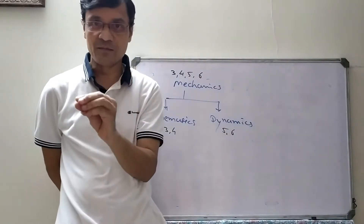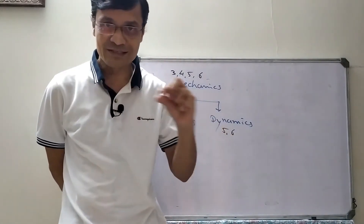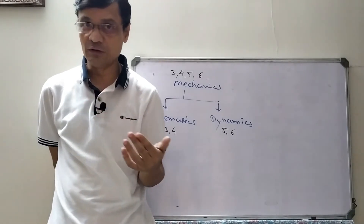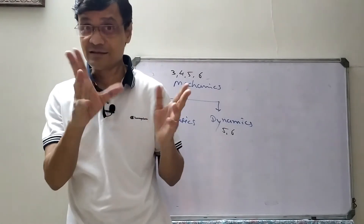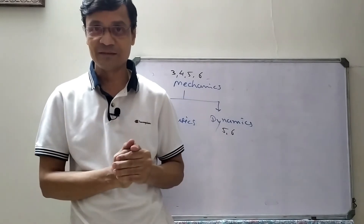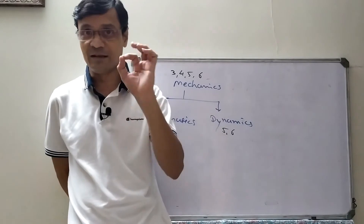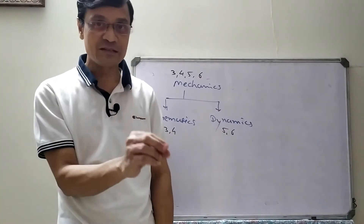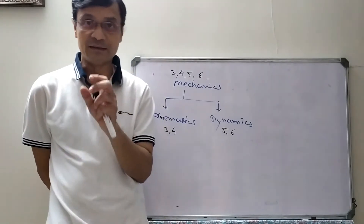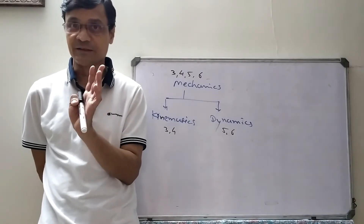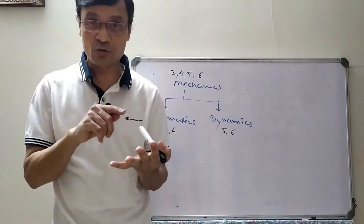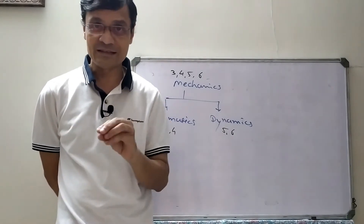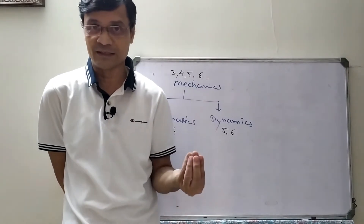Now, the concept of particle is important. A particle is an object that has mass but no dimension. Dimension refers to radius, length, breadth, height, diameter — all of these. A particle has mass but no dimension, meaning it has no real existence. This concept is used so we can explain motion easily.